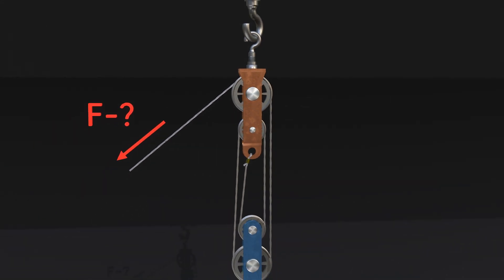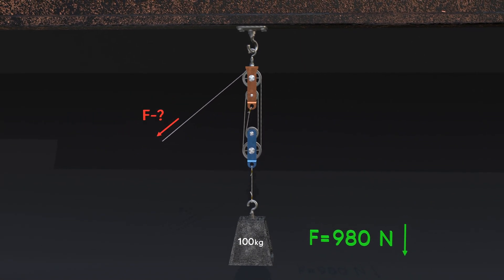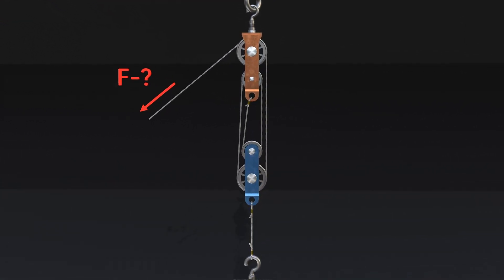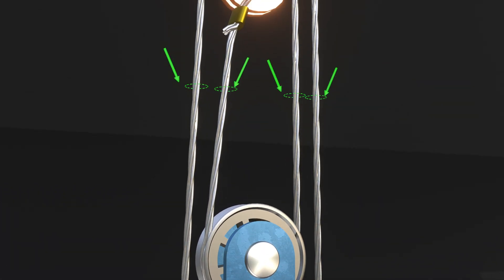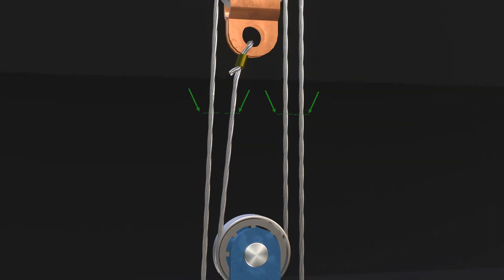But what if the task was made a little more complicated? It's actually simple. The main thing is to count the number of cables that directly hold the weight. In this example, there are four of them, which means the weight of the load is distributed evenly between the four cables.